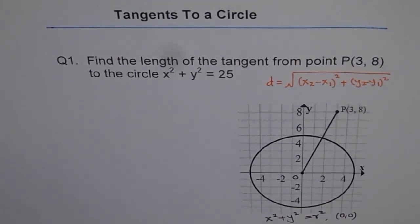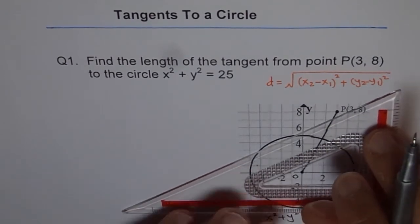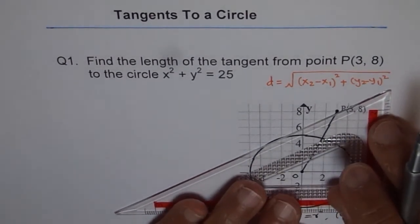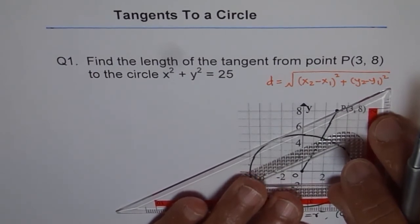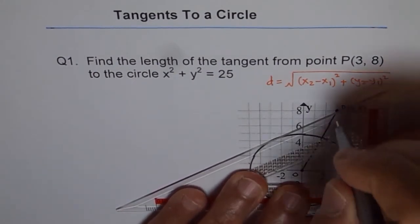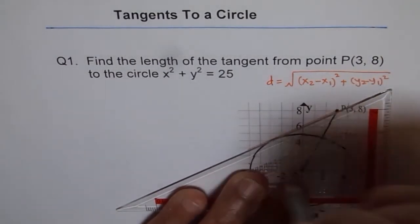Now, let's draw a tangent from here to the circle. So that seems to be a good line for a tangent. So let's say this is our approximate tangent from point P to the circle.